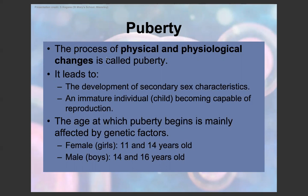Puberty is the process of physical and physiological changes in the body. It leads to the development of secondary sex characteristics and an immature individual becoming a mature individual capable of reproduction. For females, puberty usually starts between age 11 and 14, and for males between age 14 and 16, but this is mainly affected by genetic factors.